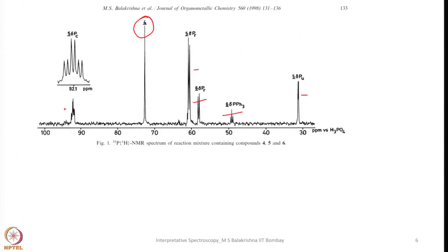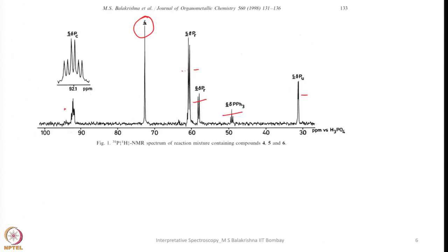Let us see whether we have those signals — yes, we have a doublet, we have a doublet with a very small coupling constant value, and we also have a multiplet here — it is a triplet of doublets. That means this is giving us the idea that three compounds are formed. By looking into the integration we can gauge how much quantity of each compound is formed and in what ratio, and also examine the other two compounds where ionic products are present.